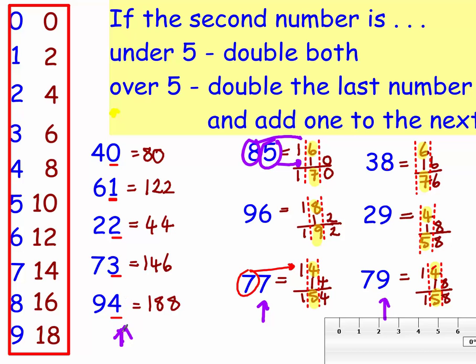In this first column, with the purple arrow, all of them are under 5, that last number, so we can just double both numbers, double the 4, get 8, double the 0, get 0, and put them next to each other.